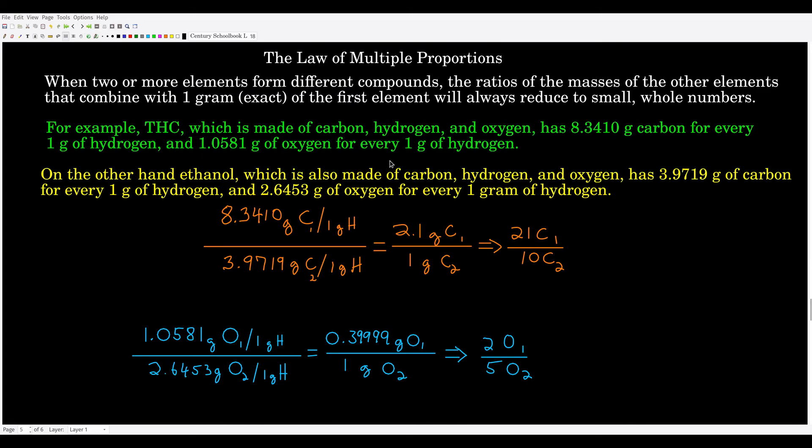The last part of early atomic theory is the law of multiple proportions. The difference between this and the law of constant composition is that constant composition deals with different samples of the same compound, while multiple proportions deals with different compounds made up of the same elements. The law states that when two or more elements form different compounds, the ratios of their masses always reduce to small whole numbers.